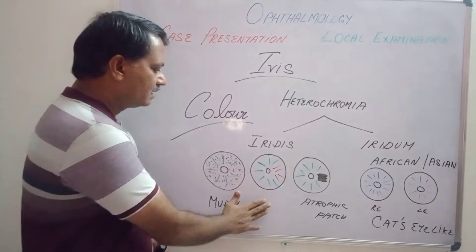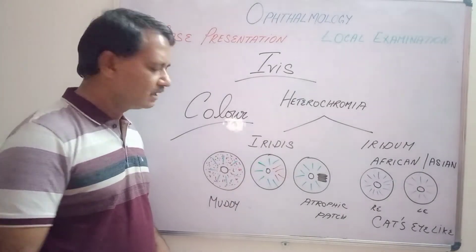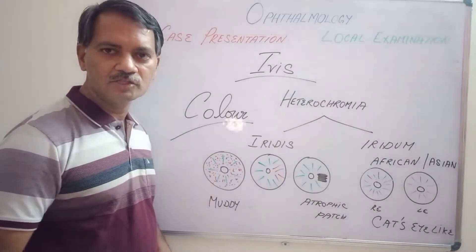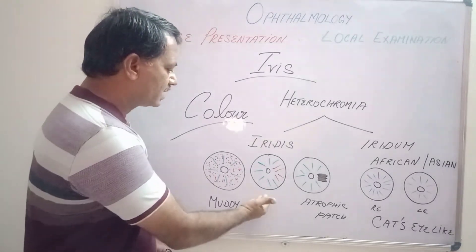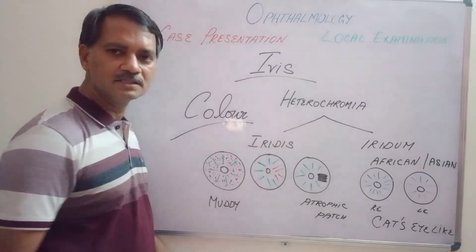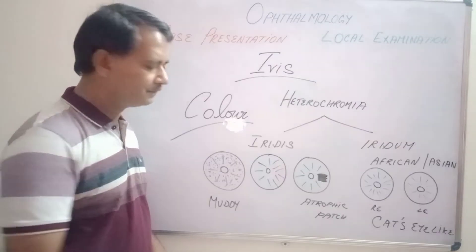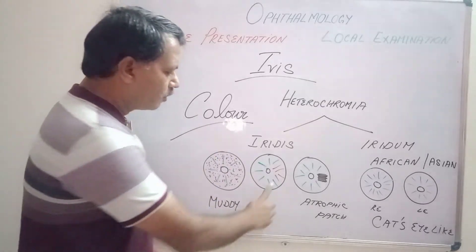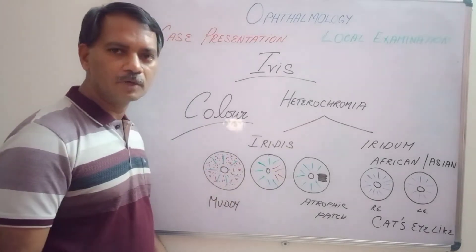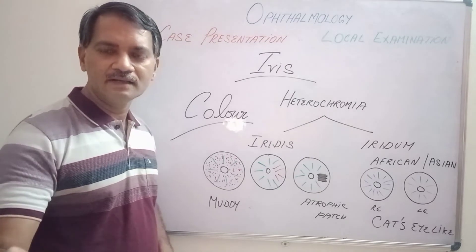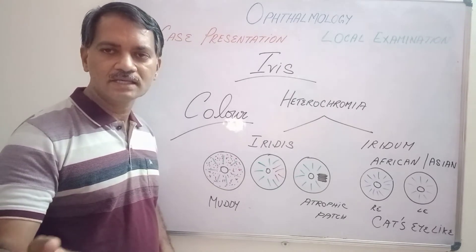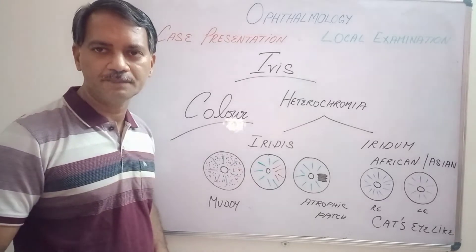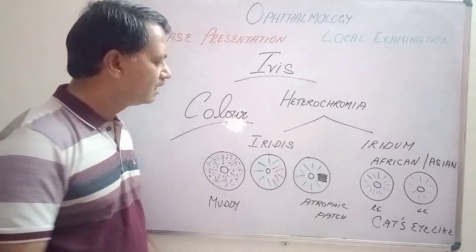The next important example is when one sector of the iris is of a different color. Suppose this is the color of a European's iris — it appears green colored. If one sector becomes brown in color, then it is called heterochromia iridis. This is not normal for a European person.